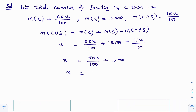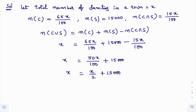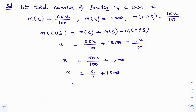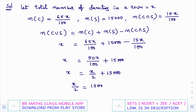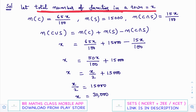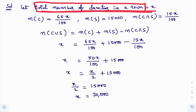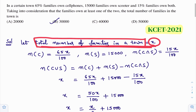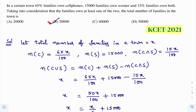Taking x/2 to the left side: x − x/2 = 15,000, which gives x/2 = 15,000, therefore x = 30,000. The total number of families in the town is x = 30,000. So option B is the correct answer for this problem.